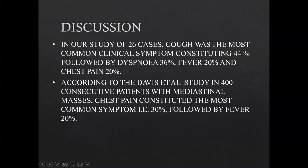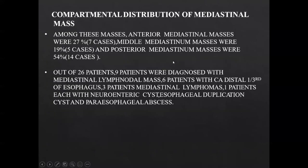In our study of 26 cases, cough was the most common clinical symptom constituting 44%, followed by dyspnea 36%, fever 20%, and chest pain 20%. According to Davis et al.'s study of 400 consecutive patients with mediastinal masses, chest pain was the most common symptom at 30%, followed by fever at 20%. Regarding compartmental distribution, anterior mediastinal masses were 27% (7 cases), middle mediastinal masses were 19% (5 cases), and posterior mediastinal masses were 54% (14 cases).